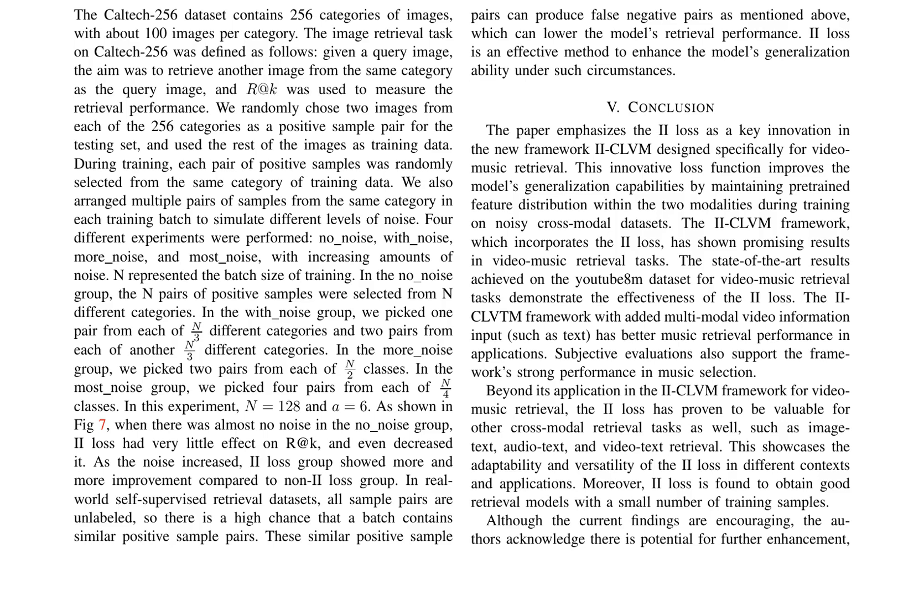The II loss is also demonstrated to be effective in dealing with different levels of noise interference and achieving state-of-the-art results on the Caltech-256 dataset for image retrieval tasks. The authors conclude that the II loss is a valuable innovation in the IICLVM framework, with promising results on various datasets and adaptability in different contexts and applications.